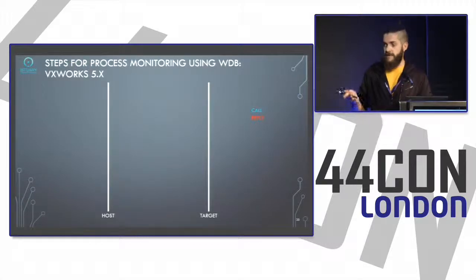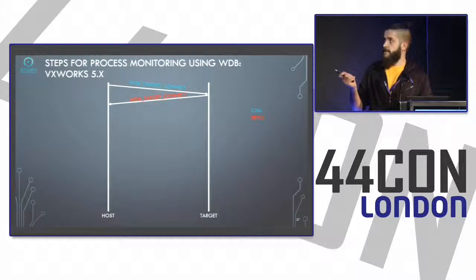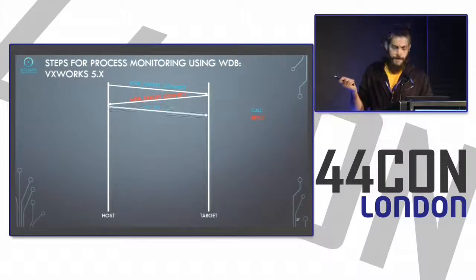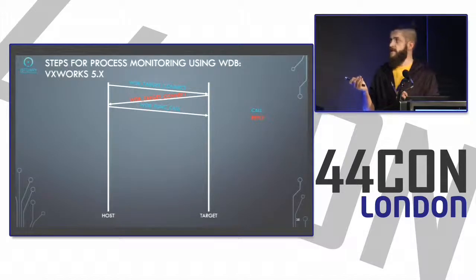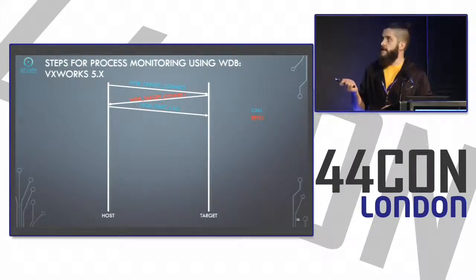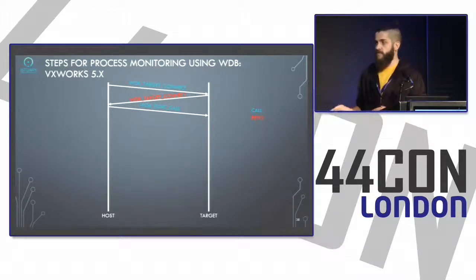To debug the target, you follow certain steps. First, you connect normally and the target replies. There is a slight difference from conventional debugging: on VxWorks 5 and 6 you have to set the task you want to debug to be breakable, because by default tasks are non-breakable. If you try to set a breakpoint on a non-breakable task, it raises an exception on VxWorks 5.